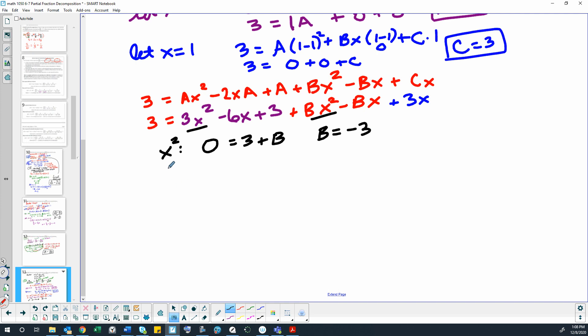Let's make sure everything else agrees with that. So our x terms we would have zero because there's no x terms on the left, and then on the right our x terms would be negative 6 and negative B and positive 3. So if we add those together we would get 0 equals negative 3 minus B. Move the B to the other side, B would equal negative 3, so that agrees.